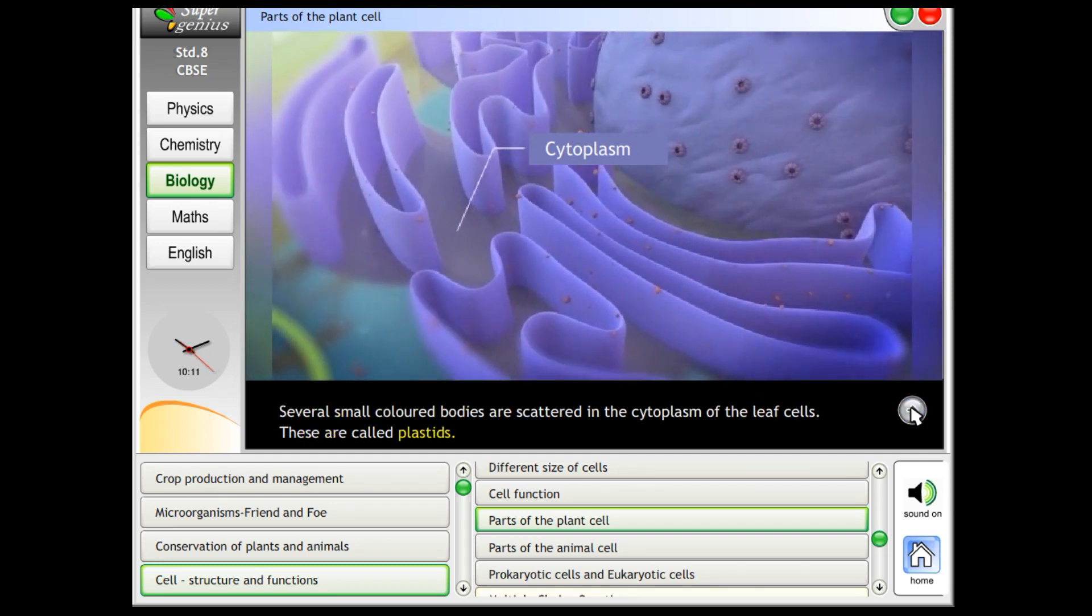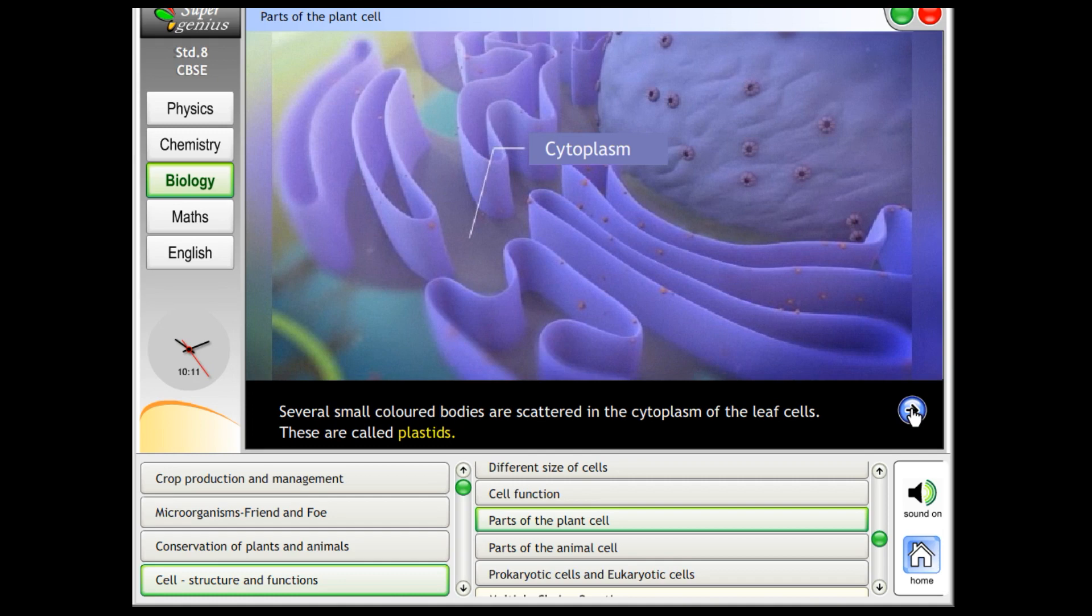Several small coloured bodies are scattered in the cytoplasm of the leaf cells. These are called plastids.